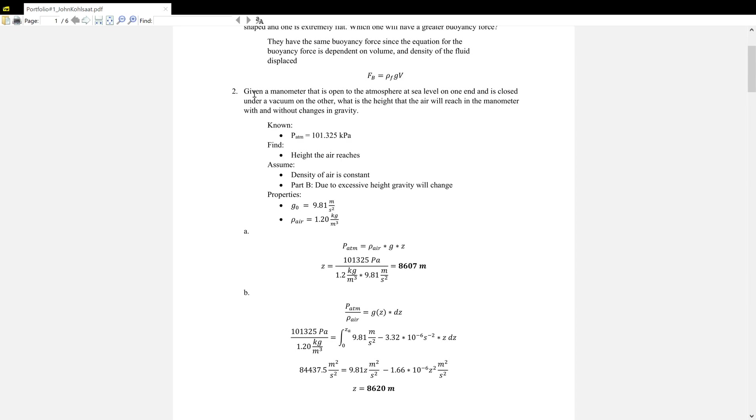Now for number two, we're given a manometer that is open to the atmosphere at sea level and is closed on one end under a vacuum. What is the height that the air will reach in the manometer with and without changes in gravity? We know atmospheric pressure and we're told to find the height it reaches. Density of air can be assumed to be constant because the inlet is at sea level and that does not change. And for part B, gravity will change.